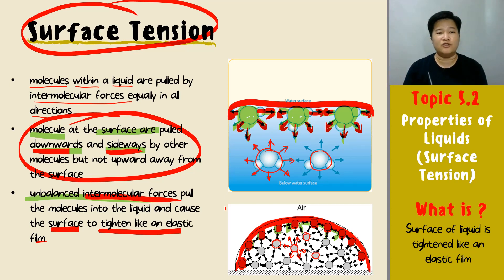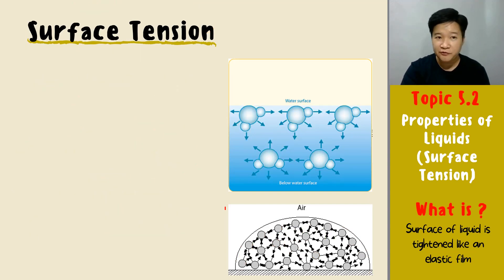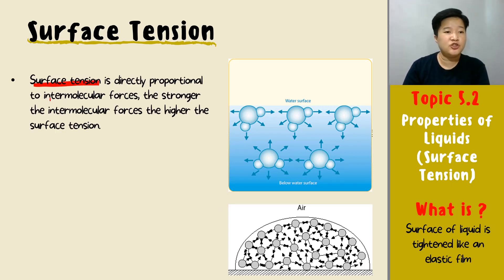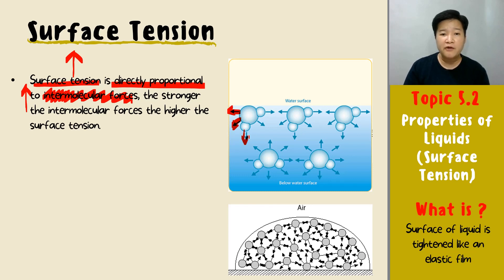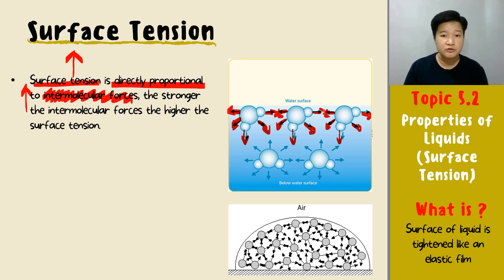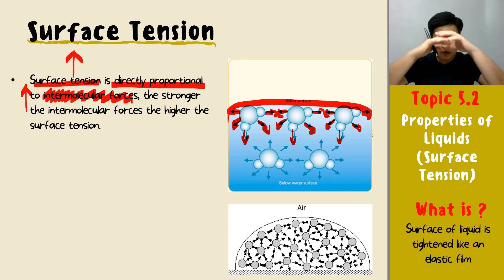Surface tension can be affected by two factors. The first is intermolecular forces, which is directly proportional to surface tension. The stronger the intermolecular forces, the stronger the surface tension, because the forces pull the liquid molecules downward and sideways more strongly, resulting in an extremely strong elastic film on the surface.